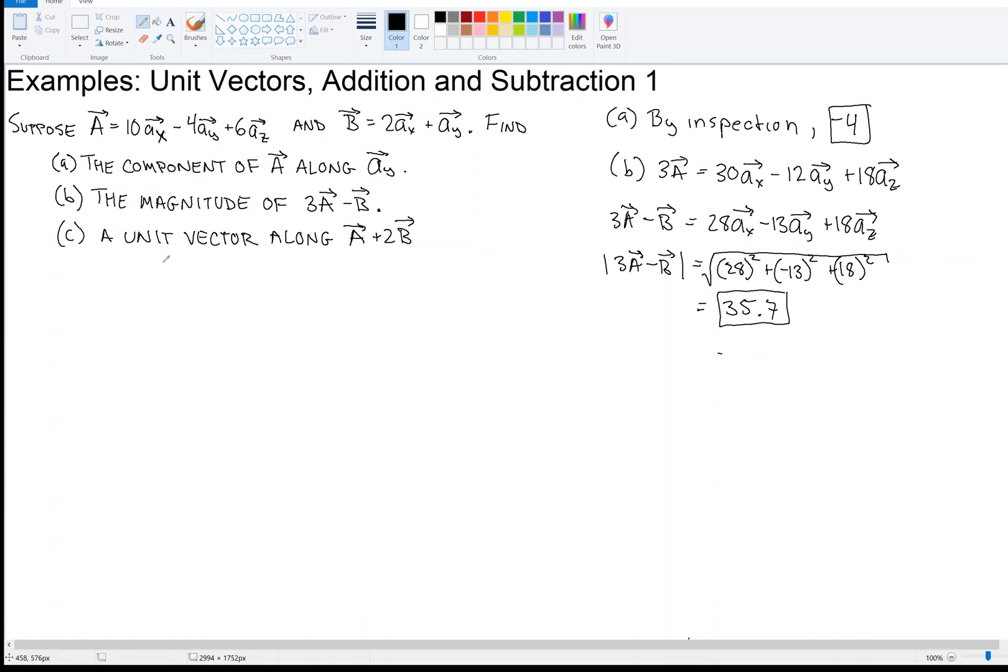Now part C then is a unit vector along A plus 2B. I'll do part C over here. Let's first compute this vector, A plus twice B. So when we do that, let's see if we can do it a little bit quicker now. We're going to take, component-wise, we have 10 in the X direction. And then 2 times 2 in the X direction. So that's 4 and 10. So that's 14 in the X direction.